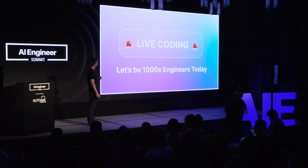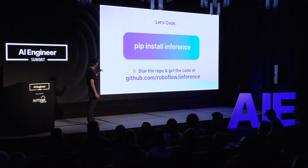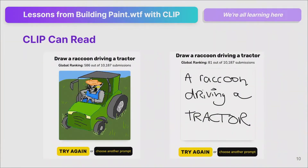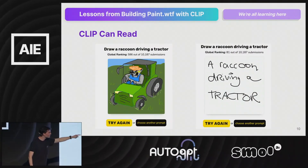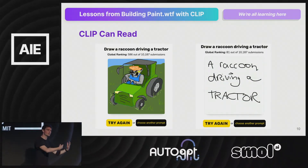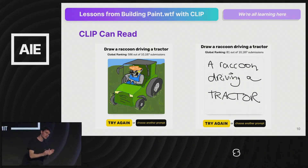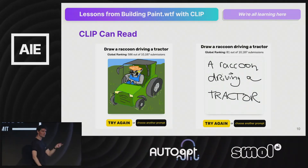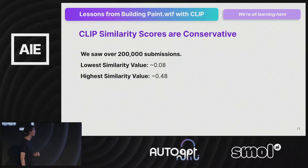Let me share some lessons from the trials and tribulations of putting things on the internet for strangers to submit images. First: CLIP can read. Users were submitting things — someone who ranked 586 out of 10,187 drew a raccoon, while someone else just wrote 'a raccoon driving a tractor' and ranked 81. The way we fixed this was penalizing submissions — we used CLIP to moderate CLIP. We told it: if you think the image is more similar to handwriting than to the prompt, penalize it.